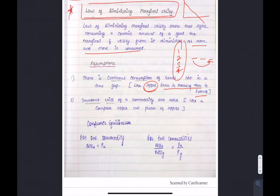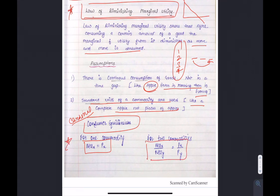Finally, in the cardinal approach, where will consumer equilibrium happen? If we purchase one commodity and consume it, equilibrium occurs when marginal utility equals price. But if we consume two commodities, the marginal utility to price ratio should be equal for both commodities. These two conditions are very important. Direct question comes: where will consumer equilibrium happen in the cardinal approach if consuming one commodity versus two commodities? These two equations you must remember. In the next video, we will take the ordinal approach.